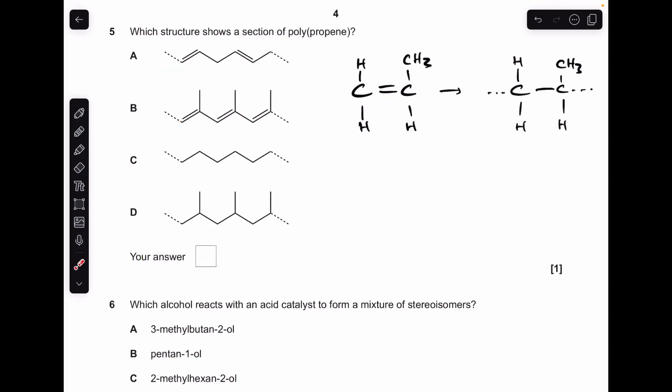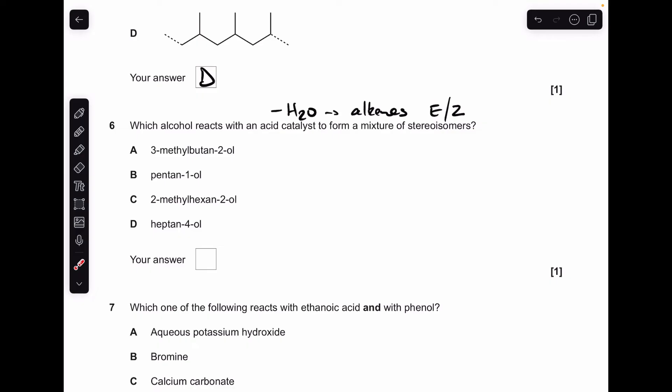Moving on to number five. I've drawn out the displayed formula for propene. I always base my addition polymer monomers on an ethene structure—makes it really easy. To go to the polymer chain, or the repeat unit for the polymer chain, we just break the pi bond and put these continuous end bonds on. So the repeat unit's going to look like that. Which one of these is that? It's D.